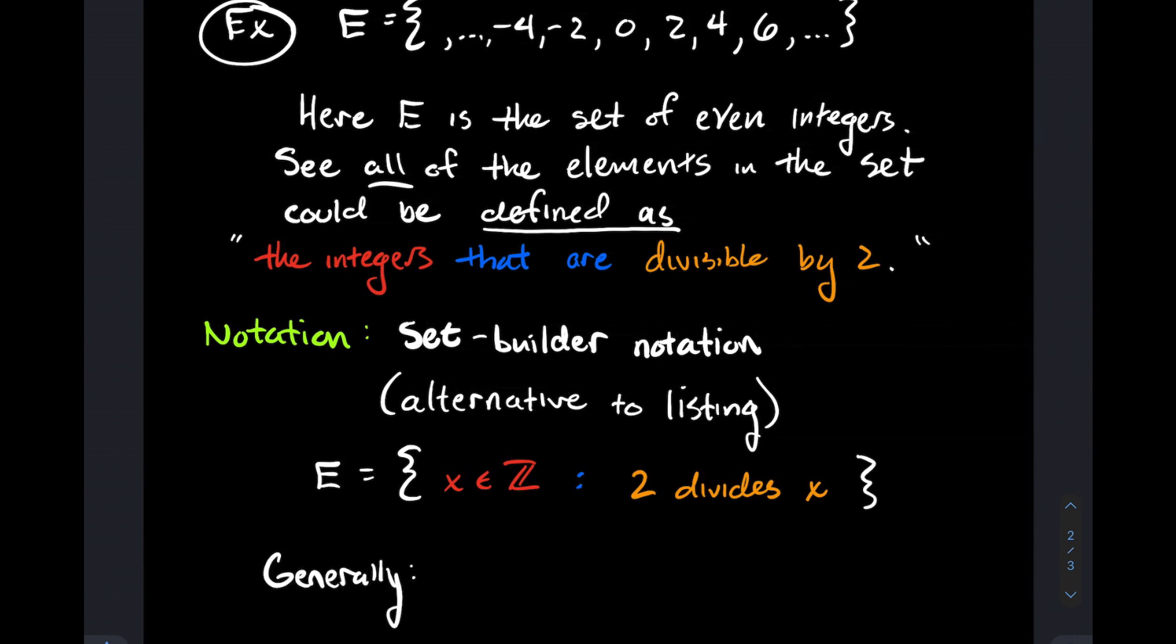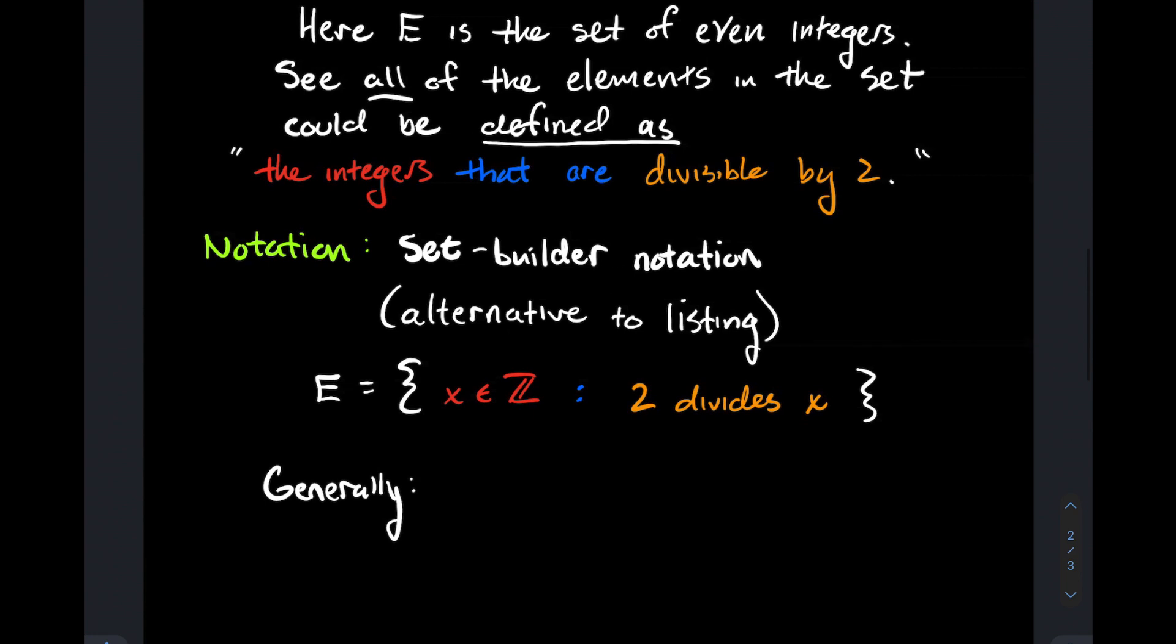Let me tell you in general the pattern for set-builder notation. You start by saying your set A. Notice we use capital letters a lot. A equals the following. We throw our curly braces down, and the first thing we write is what type of objects are in A. If you refer to my example with E, I'm telling you about some integers that do something.